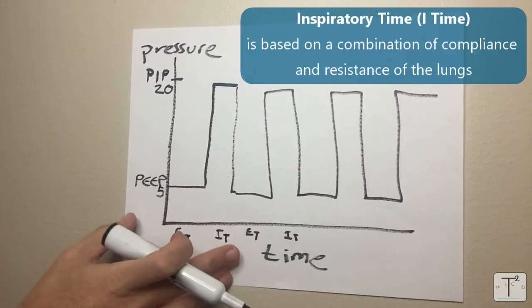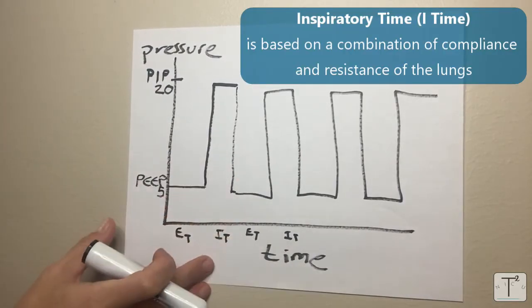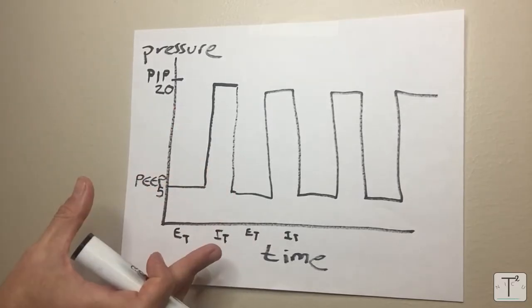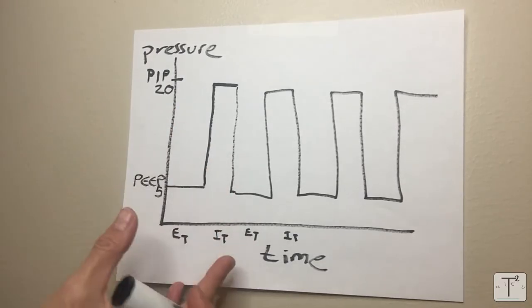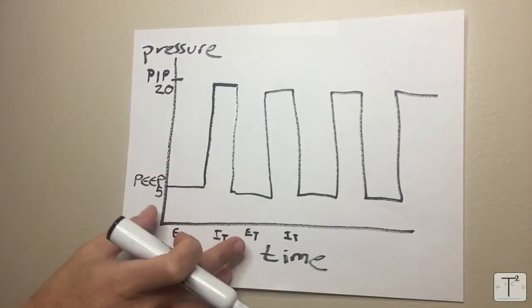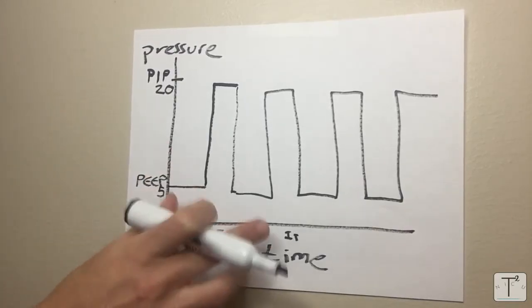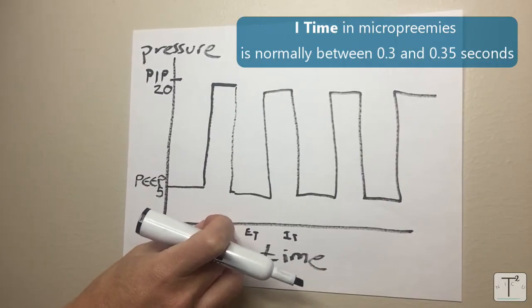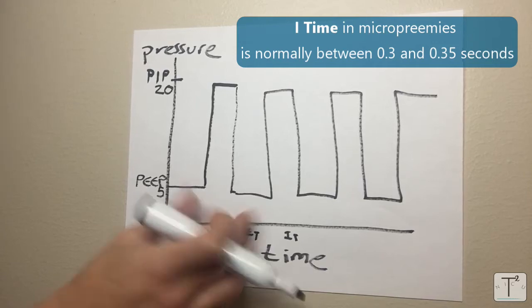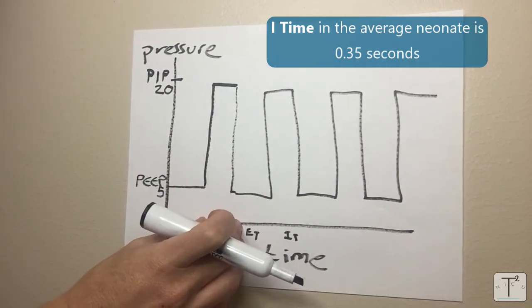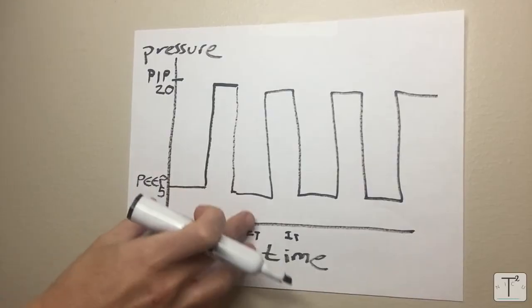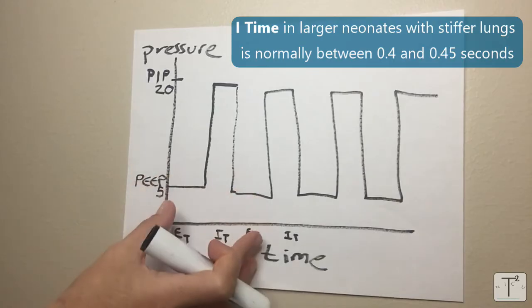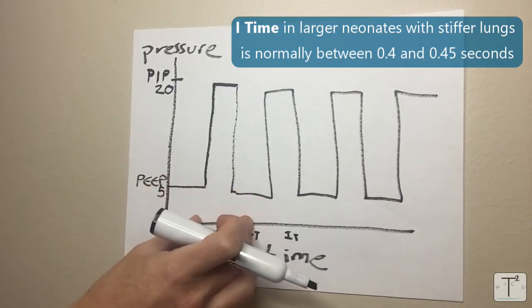In reality I time is actually dependent on a combination of compliance as well as resistance of the lungs. Generally the stiffer the lungs the longer it will take them to fill so the longer the I time should be. We pretty much fix the I time in neonates. For the tiny ones, the micro preemies, our I time is normally somewhere between 0.3 and 0.35 seconds. For most neonates we use about 0.35 and if the babies are a lot bigger and they have stiffer lungs, especially for example in babies with chronic lung disease, then we would use I time of 0.4 or even 0.45 seconds.